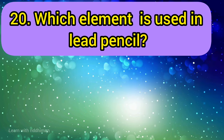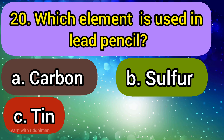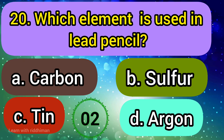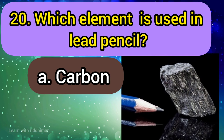Which element is used in a lead pencil? Carbon, sulfur, tin, argon. Answer is carbon.